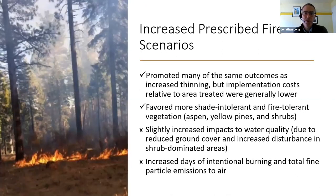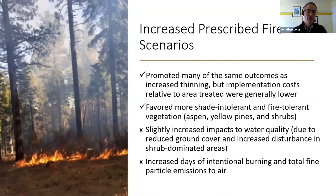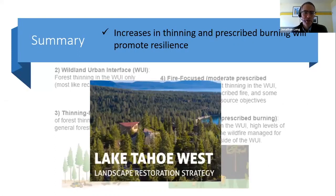The increased prescribed fire scenarios promoted many of the same outcomes as increased thinning, but implementation costs relative to area treated were generally lower. They favored more shade-intolerant and fire-tolerant vegetation — aspen, yellow pines, and shrubs. They slightly increased impacts to water quality due to reduced ground cover and disturbance in shrub areas, and increased the days of intentional burning and total fine particulate emissions. Overall, the Lake Tahoe West restoration strategy seems to reflect a favorable combination of the different scenarios where increases in thinning and prescribed burning would promote resilience across the indicators.